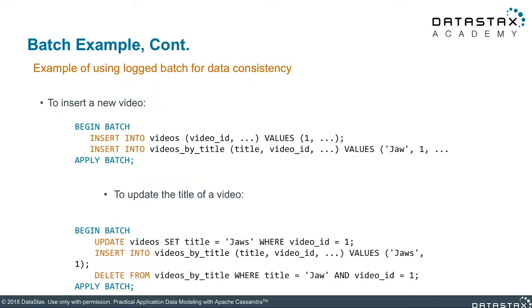With logged batches, you wouldn't need to worry about individual write operations failing. All we need to do is use the syntax for a logged batch: starting with BEGIN BATCH, writing the operations that should be included in the batch, and then finishing it with the keywords APPLY BATCH. In this case, the write operations are all sent together to a coordinator node. If the batch is accepted by the coordinator, it is then up to the database to ensure that the statements in the batch are executed successfully.